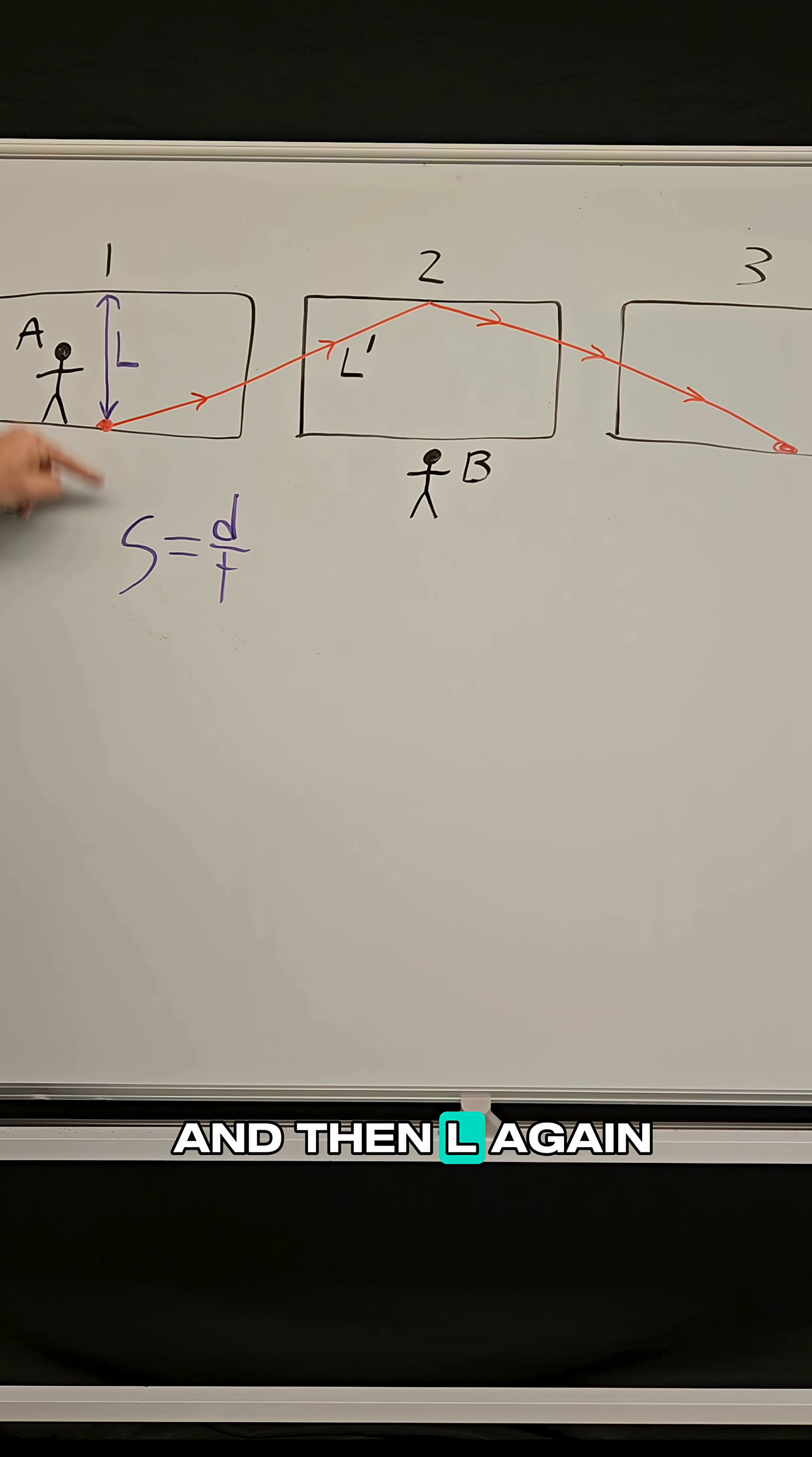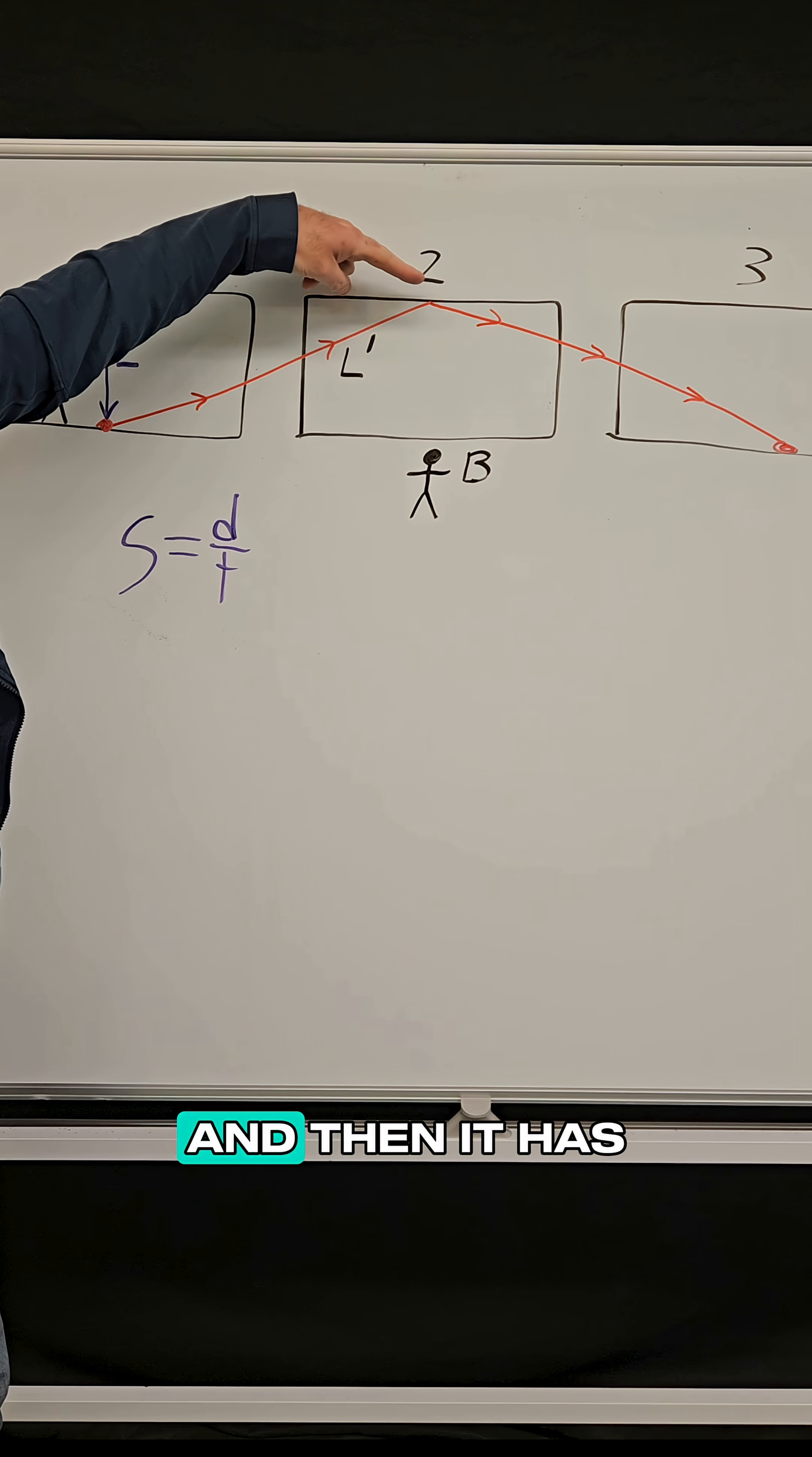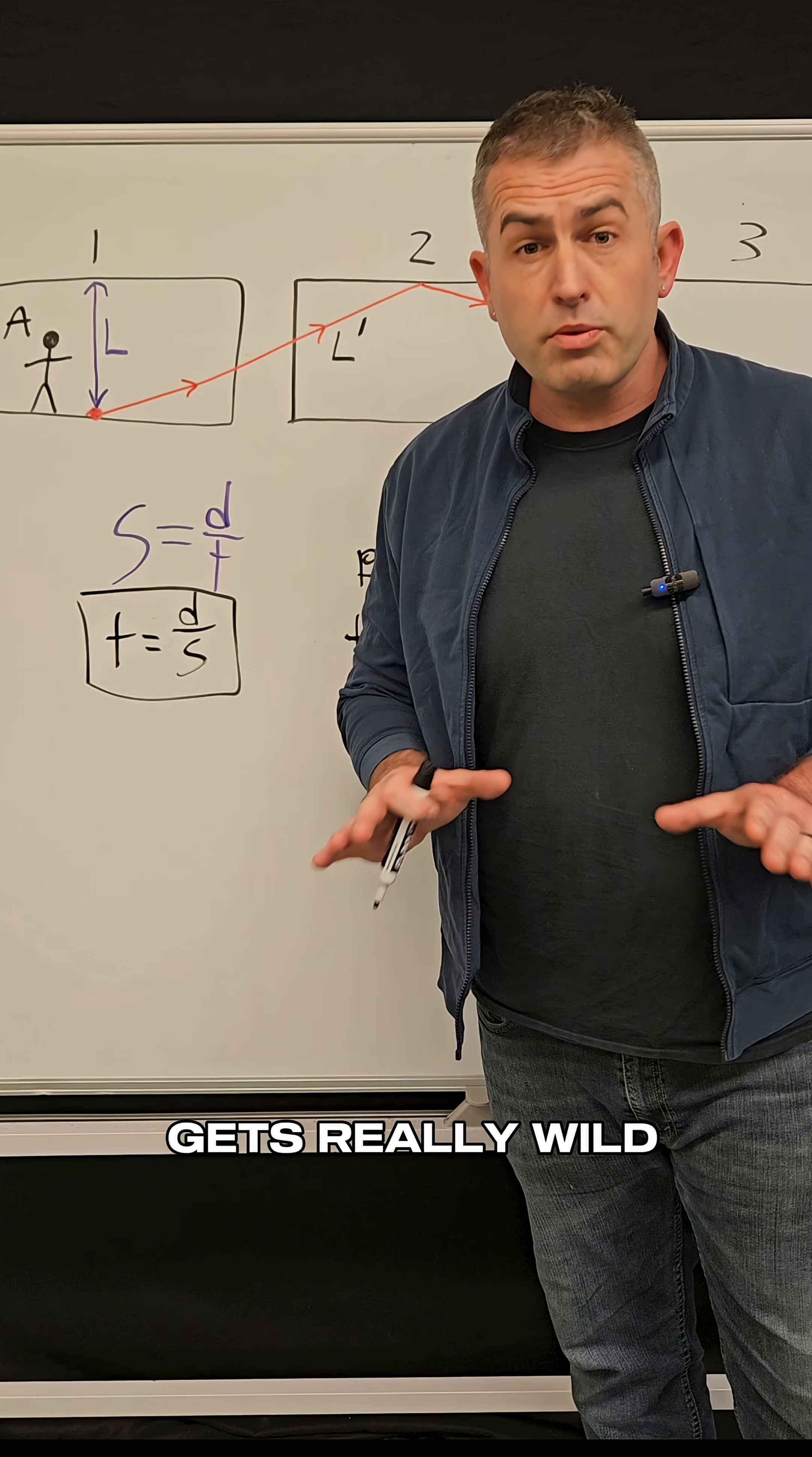Instead of going L and then L again, it's traveling this greater distance called L prime, and then it has to go L prime to get back to the ground. So here's where it gets really wild.